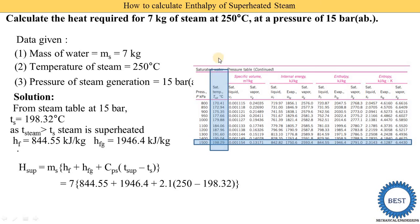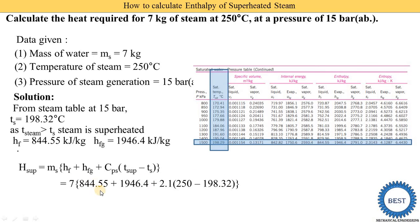The saturated temperature taken from the steam table is 198.29 degrees centigrade. Calculating the bracket: hf + hfg + Cps × (250 − 198.29) gives approximately 2899.52 kilojoules per kilogram. Multiplied by the mass of 7 kg, the total heat required is 20296.34 kilojoules.